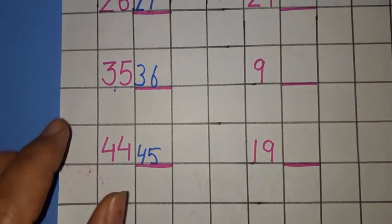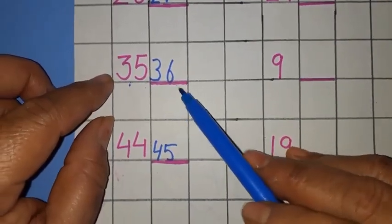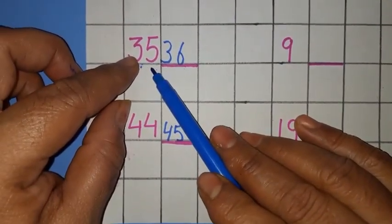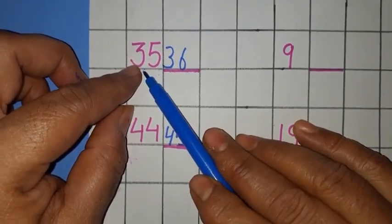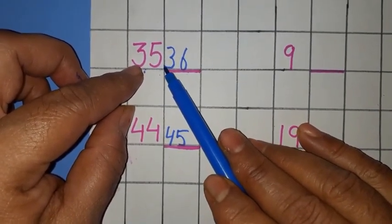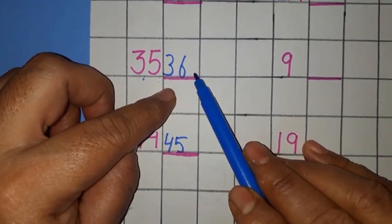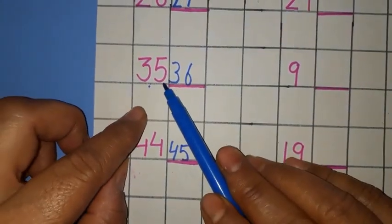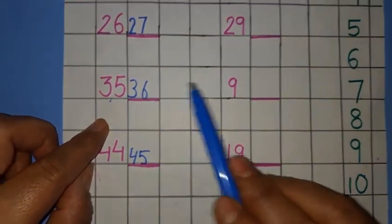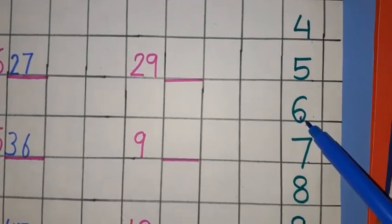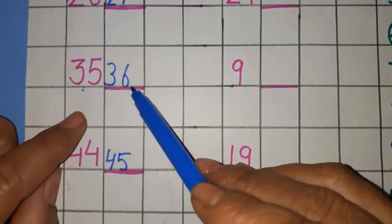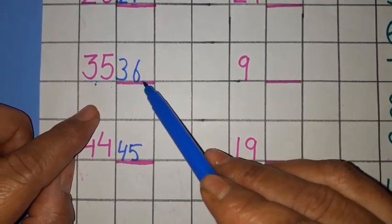Similarly, I have written the rest of the numbers. The next number is 35. Write 3 as it is. The second digit is 5. Find out what comes after 5. It is 6. So, write down 6 here. It becomes 36.